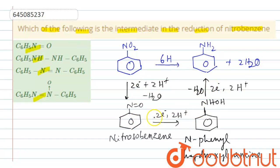Now here, the intermediates are nitrosobenzene and N-phenylhydroxylamine. Now we will check out here. We have only here this nitrosobenzene is there. Therefore option one is the required option. Thank you.